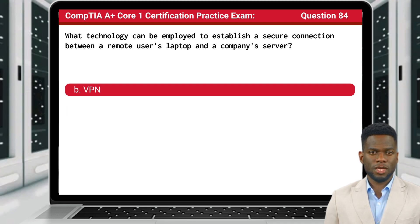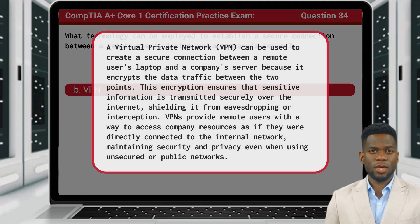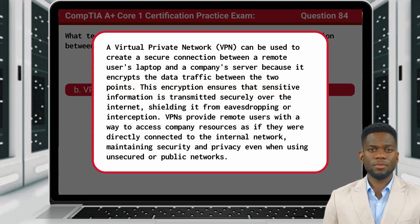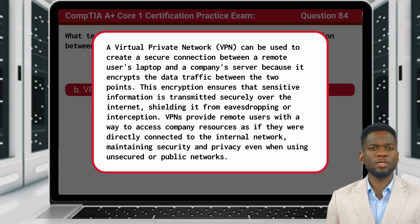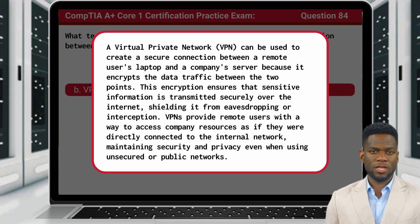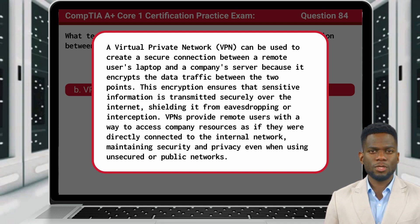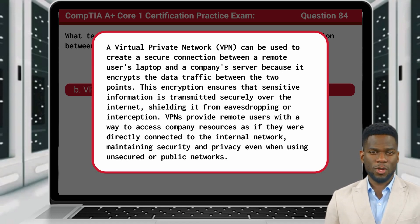The answer is B, VPN. A virtual private network, or VPN, can be used to create a secure connection between a remote user's laptop and a company's server because it encrypts the data traffic between the two points. This encryption ensures that sensitive information is transmitted securely over the Internet, shielding it from eavesdropping or interception. VPNs provide remote users with a way to access company resources as if they were directly connected to the internal network, maintaining security and privacy even when using unsecured or public networks.